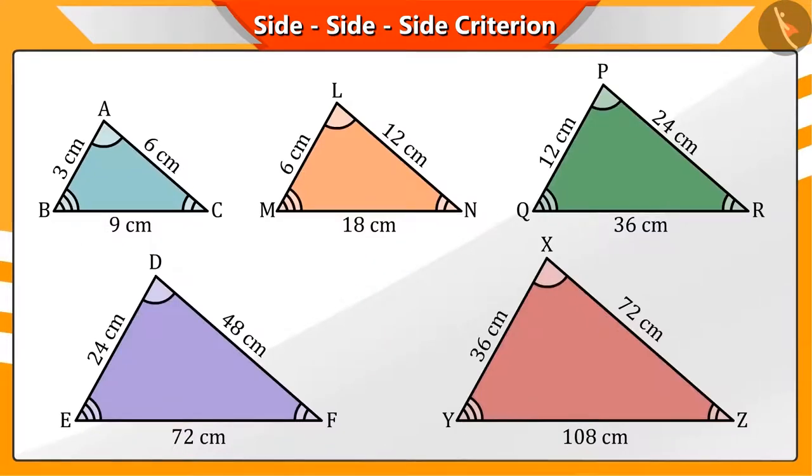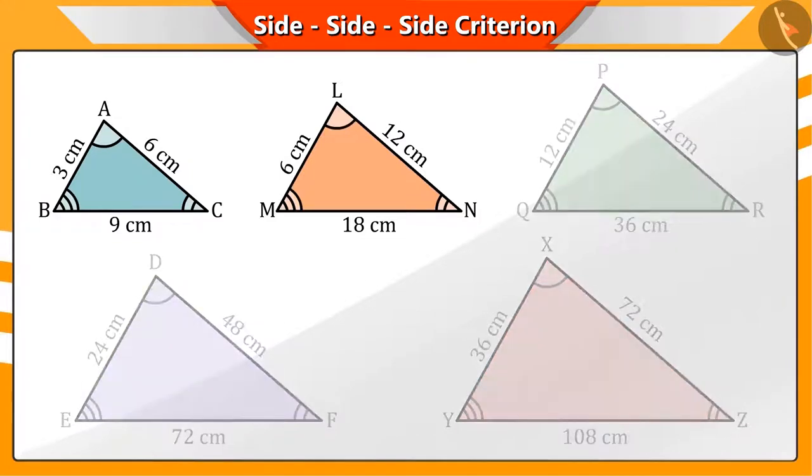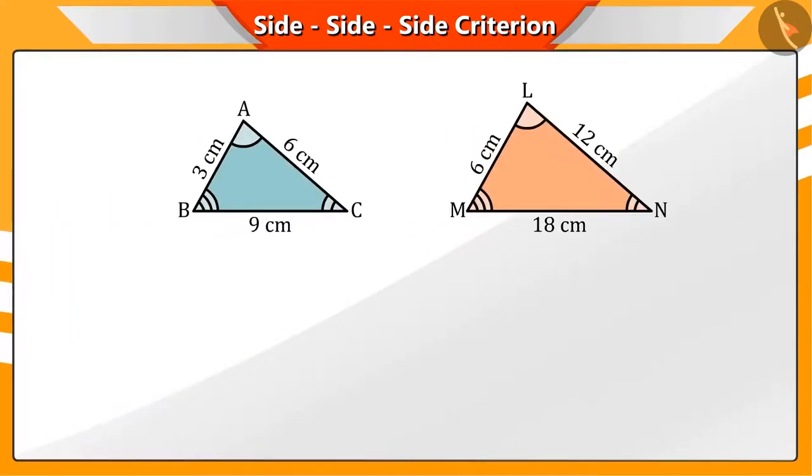To understand this, we will take triangles ABC and LMN. What do you understand by these two triangles?